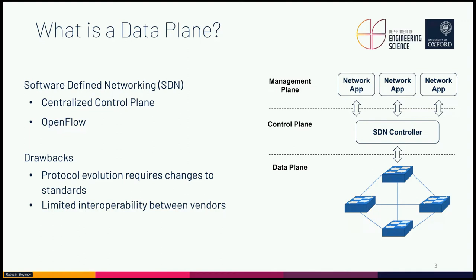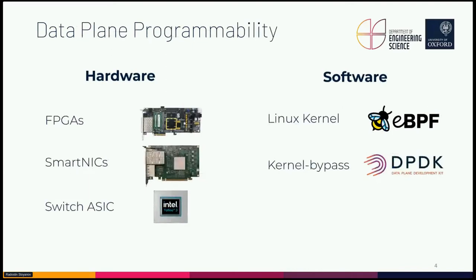The network community has therefore focused on extending the programmability of data planes. Recent innovations have enabled programmable high-speed packet processing both in hardware and software. However, programming different types of data planes often requires different tools and programming languages. For example, FPGA-based packet processors are usually programmed with hardware description languages such as Verilog or VHDL. SmartNICs and switch ASICs usually have vendor-specific SDKs, and solutions for high-speed packet processing in the kernel with BPF or in user space with frameworks such as DPDK require specialized knowledge and encounter portability problems.